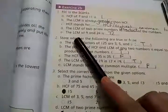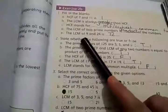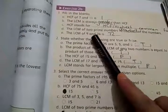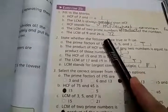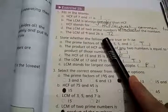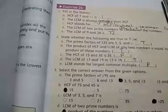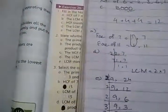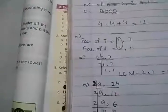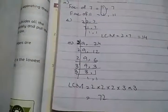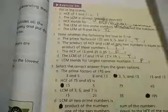Number E: the LCM of 9 and 24 is dash. We find the LCM of 9 and 24, and their LCM is 72.